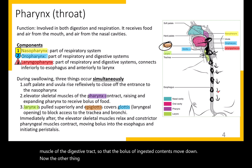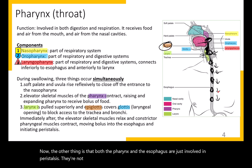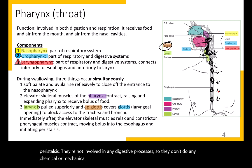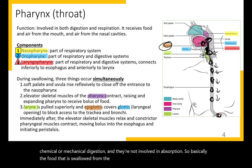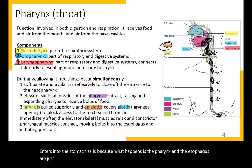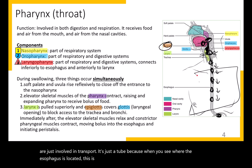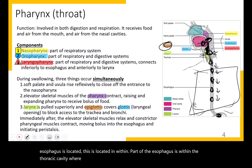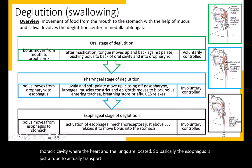Both the pharynx and the esophagus are involved only in peristalsis — no chemical or mechanical digestion and no absorption. The food swallowed from the mouth enters the stomach as-is because the pharynx and esophagus are just transport tubes. Part of the esophagus lies within the thoracic cavity where the heart and lungs are located, so it simply transports food from the mouth to the stomach.